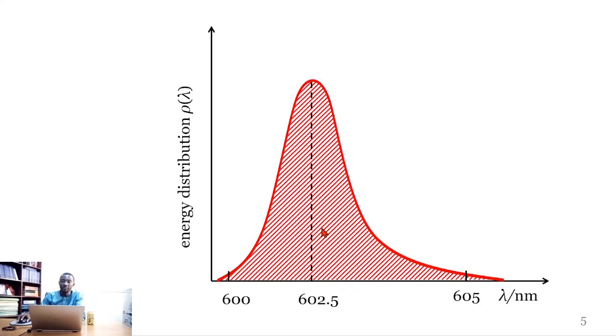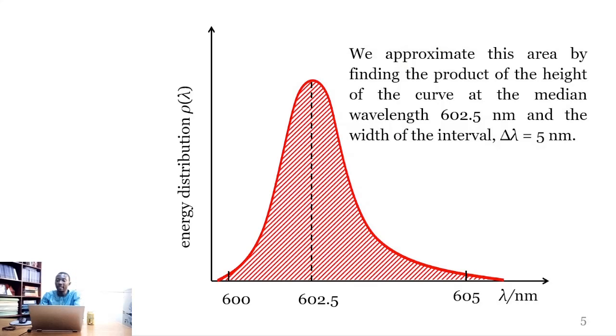What we are interested in is to calculate the area under this curve, so that we equate this area to the energy density in the ball. To do that, we approximate this area by finding the product of the height of the curve at the median wavelength and the width of the interval, which is the difference of 605 and 600.